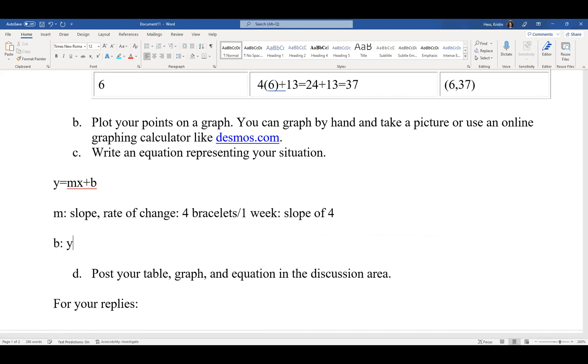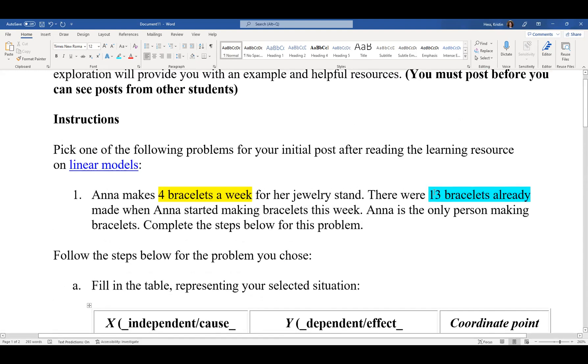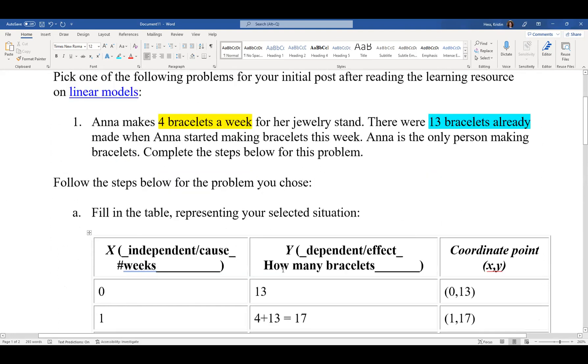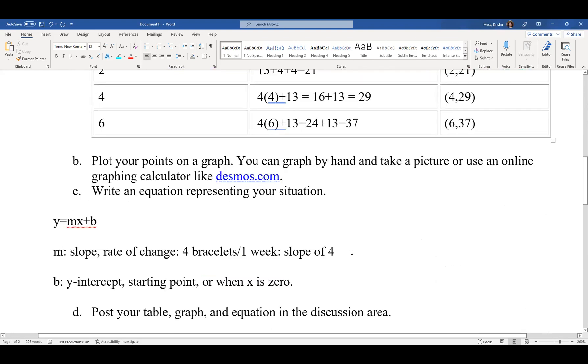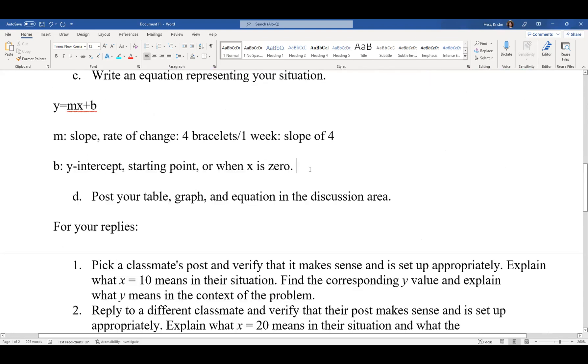B is our y-intercept. That means another word for that is our starting point, when x equals 0. So our starting point, they told us there were 13 bracelets when she started working. We also have x is 0 and y is 13. So our starting point, or our y-intercept, b equals 13. And so now we're going to put this all together.